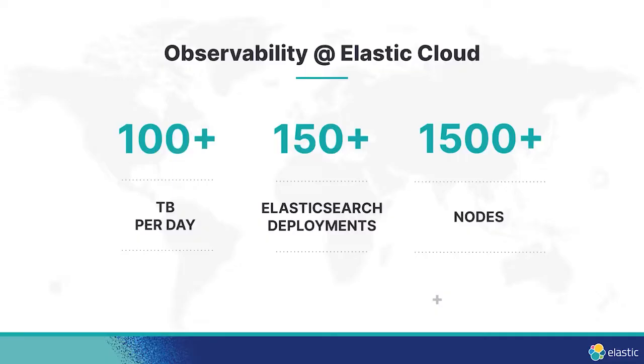In order to observe all of this, we have our own internal observability platform. We ingest over 100 terabytes a day into that platform, which includes logs and metrics across all regions combined. We manage more than 150 Elasticsearch deployments as part of our observability platform, including logging clusters, metrics clusters, metricbeat metrics, and APM metrics. The stack itself ranges the entire Elastic stack — it includes APM and Beats to push data to Logstash, which in turn ingests into our regional observability deployments. We try to keep all of this as close to current release as possible, and today everything is currently running 7.14.